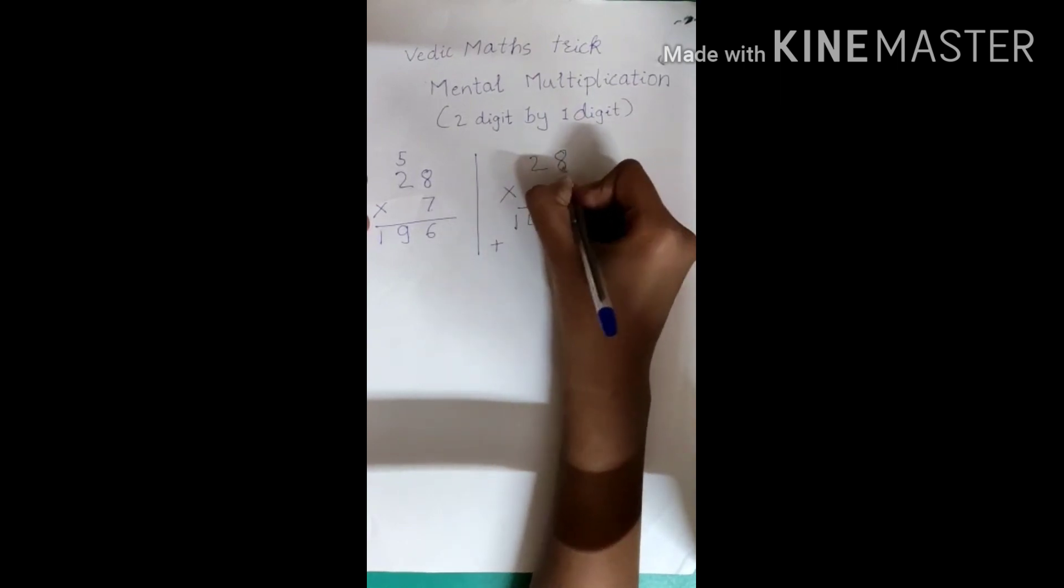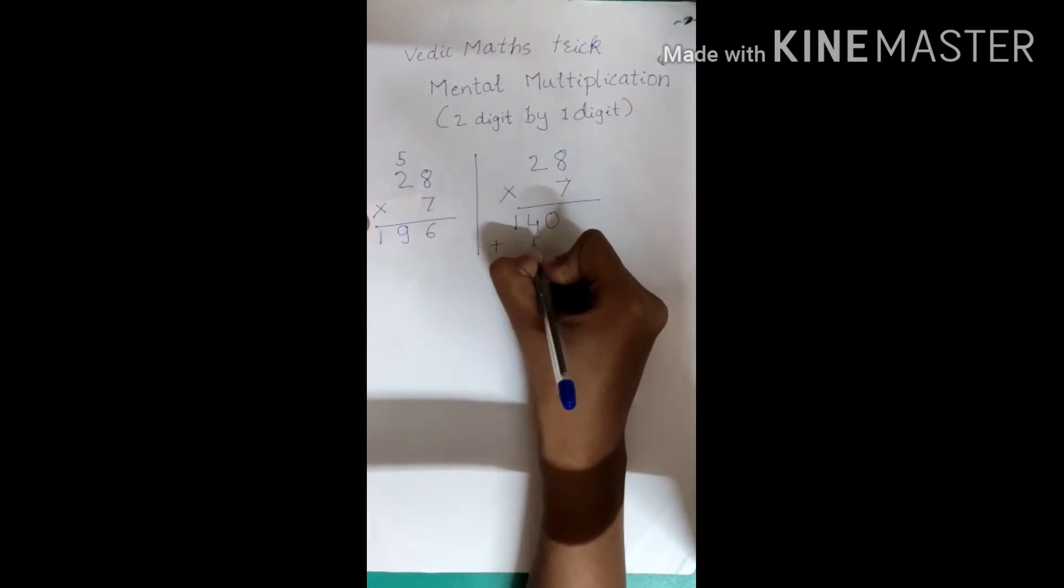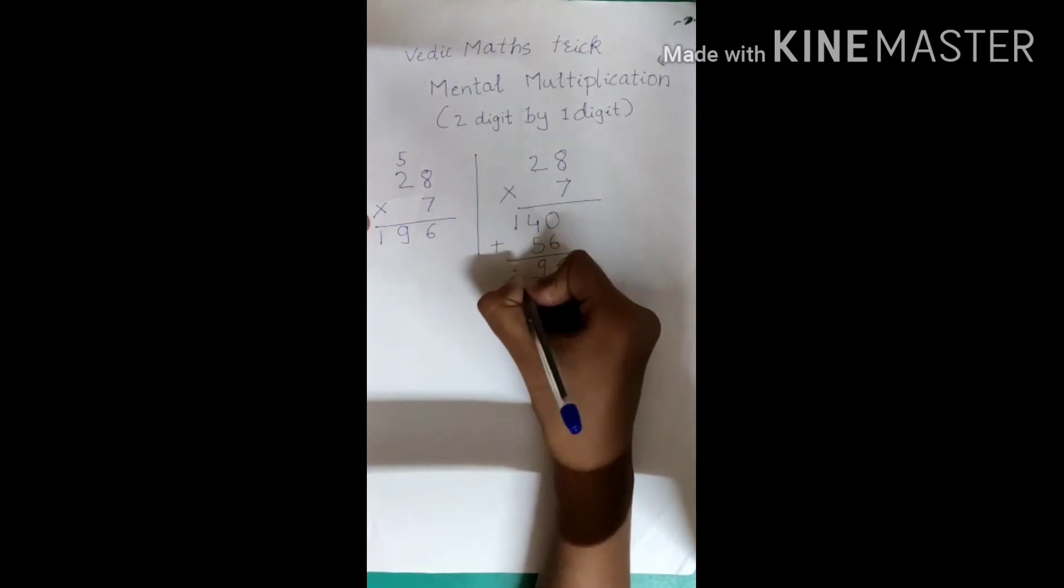Then 7 into 8 is 56. So we have to add 56, it's 196.